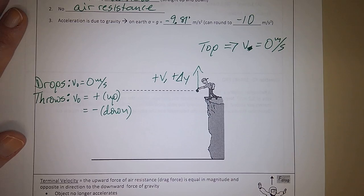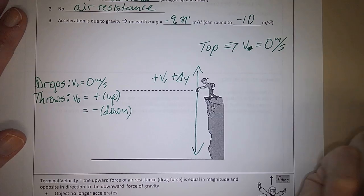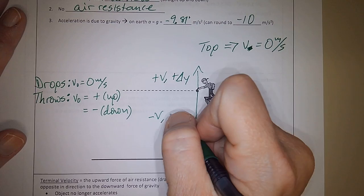So if you were to throw this down or drop it, the velocity would turn negative and the displacement is negative because it's going down.